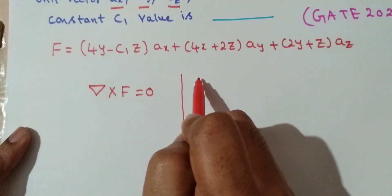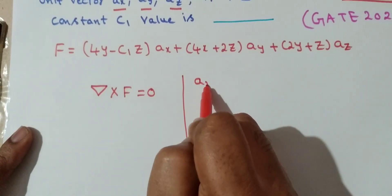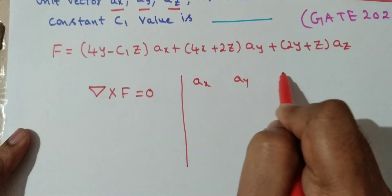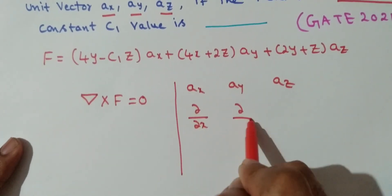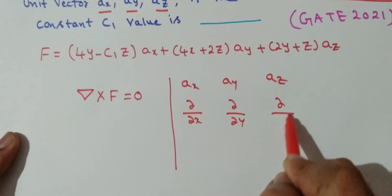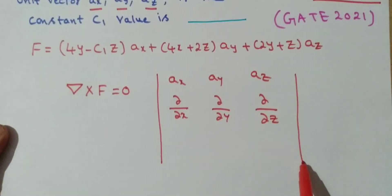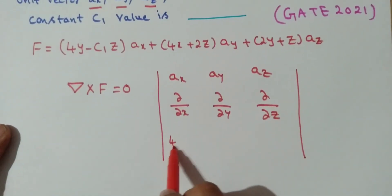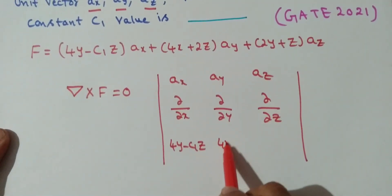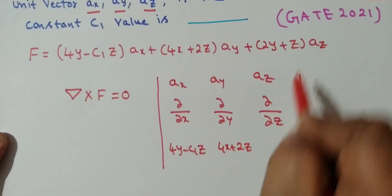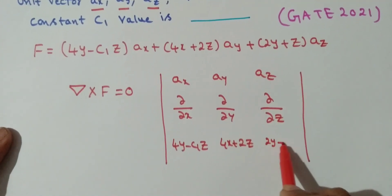So, curl of F: the determinant has ax, ay, az in the first row; ∂/∂x, ∂/∂y, ∂/∂z in the second row; and the components 4y - c1·z for ax, 4x + 2z for ay, and 2y + z for az in the third row.